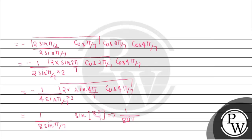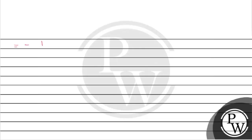We can write sin(8π/7) = sin(π + π/7) = −sin(π/7). The minus signs cancel, and sin(π/7) cancels with sin(π/7) in the denominator, so the answer is 1/8, which is the RHS. Hence proved. I hope you all understood this explanation — thank you and all the best.